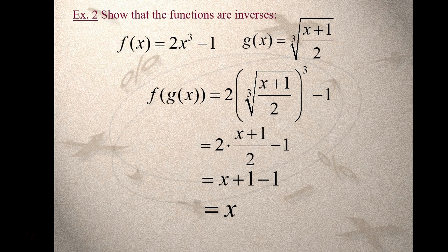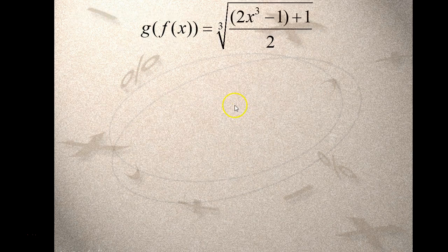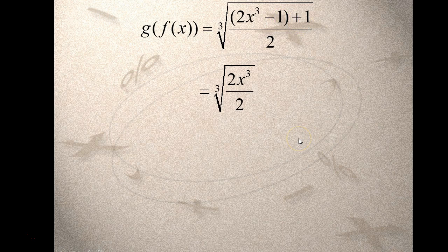But it's got to work in both directions, so let's do g composition f. G is now the outer function, so I've got cube root of parentheses plus 1 over 2. Inside the parentheses is f of x. Simplifying the numerator, the 1s cancel, the 2s divide out, and I'm left with the cube root of x cubed, which just leaves me with x. Since f composition g and g composition f both gave you x, that proves they're inverses. If either one did not give you x, you could stop — it has to work in both directions.